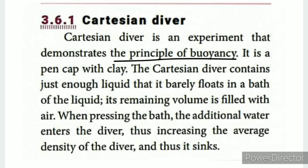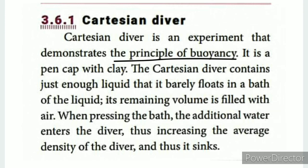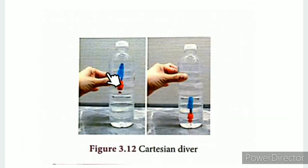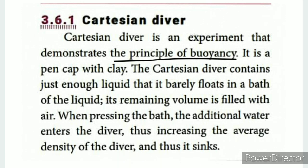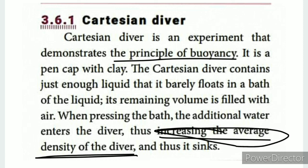The Cartesian Diver is a pen cap containing just enough liquid that it barely floats near the top of the liquid. The remaining volume is filled with air. When you press the bottle, additional water enters the diver, increasing its average density, and it sinks. Increasing the average density of the diver causes it to sink.